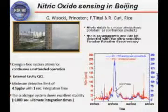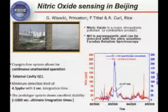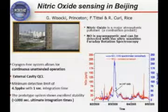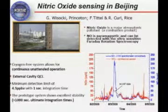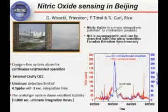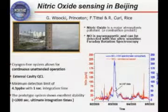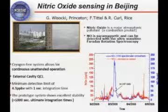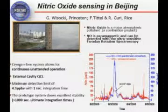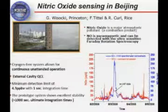This is some of the work I'm going to describe by the group. There is a very strong team at Princeton under the MRF program, an NSF program. This is some of the work that Professor Sochi, Tittel, and Curl have been doing. Basically, nitric oxide is a major atmospheric pollutant — we all know that. It's paramagnetic, so you can use ultra-sensitive Faraday rotation spectroscopy. They put together a cryogenic-free system with an external cavity QCL, and achieved a detection limit of four parts per billion in volume with one second integration time.